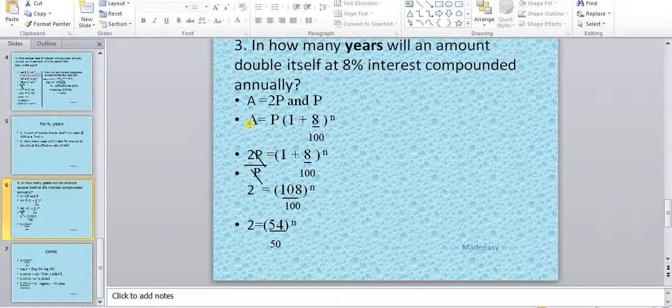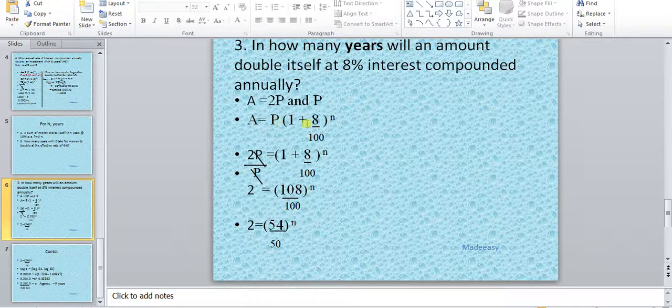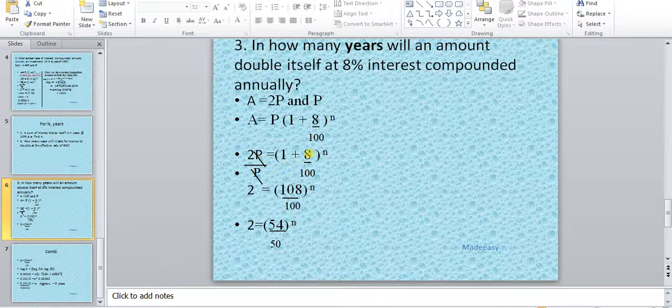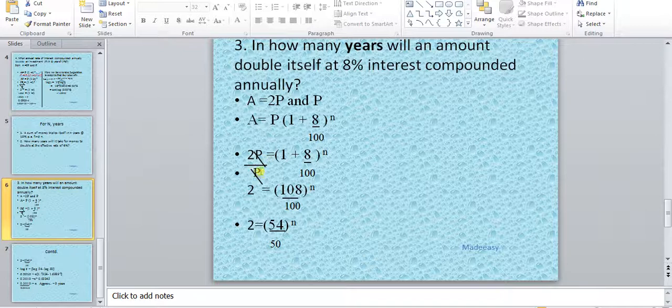Now we use the formula of compound interest. A = P(1 + R)^n. We take this P to the left hand side as denominator. We cut P by P and we have only 2 here on the left hand side.